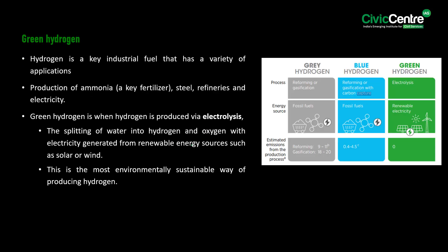Talking about green hydrogen: hydrogen is a key industrial fuel with a variety of applications, including the production of ammonia, steel, refineries, and electricity. Green hydrogen is produced via electrolysis — the splitting of water into hydrogen and oxygen — with electricity generated from renewable energy sources such as solar or wind. This is the most environmentally sustainable way of producing hydrogen.